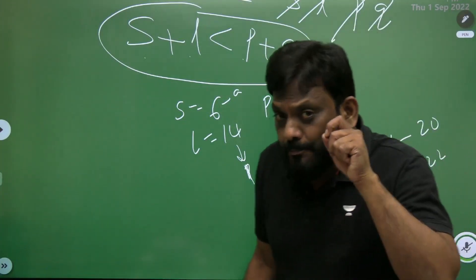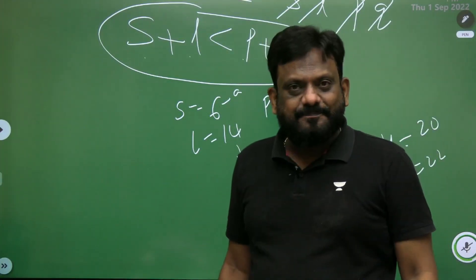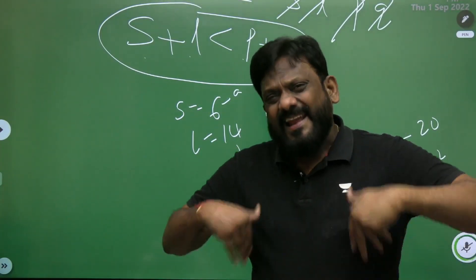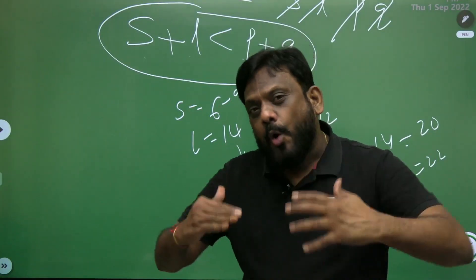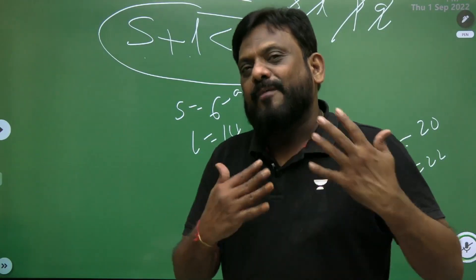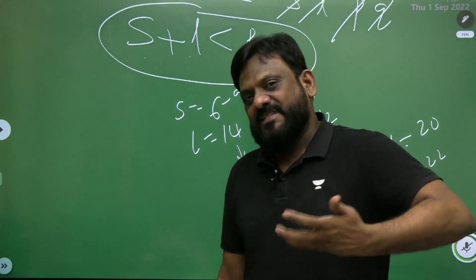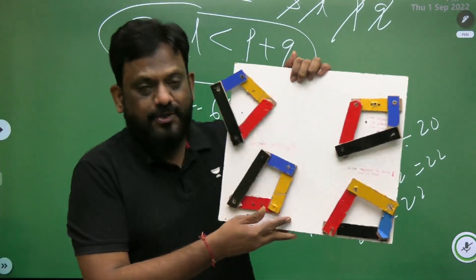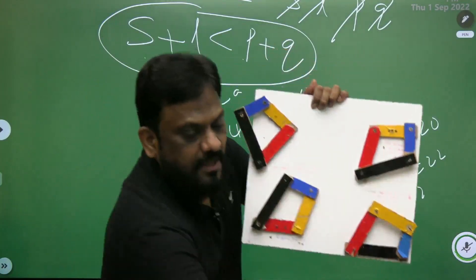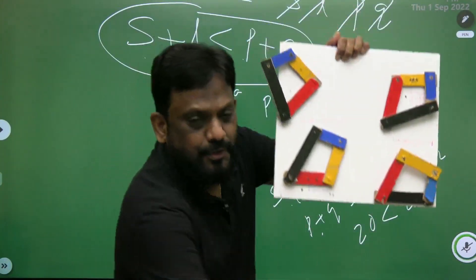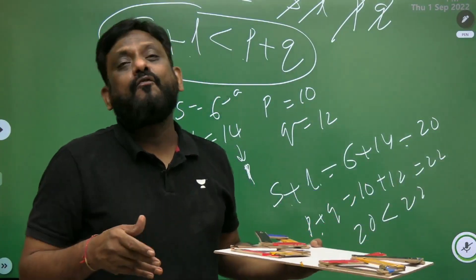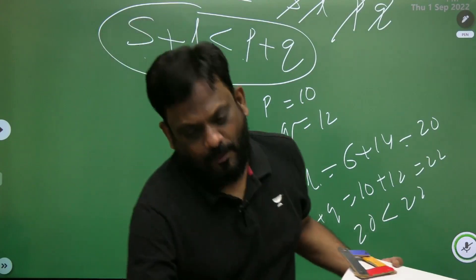If the condition S plus L is not less than P plus Q, complete rotation is not possible — this is known as a non-Grashof linkage. In the next session, I will explain how inversions are obtained from Grashof's law by fixing different links, and I'll demonstrate with these physical models. Thank you, all the best, God bless you.